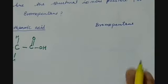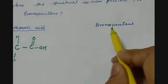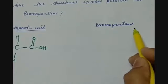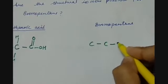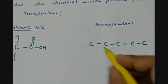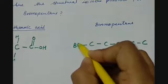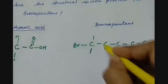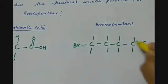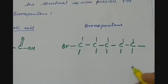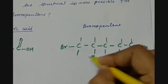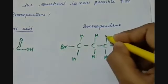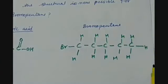For bromopentane, at the first position of the pentane alkane chain we have bromine. We have 5 carbon atoms and at the first carbon we have bromine as a substitutional group, with the rest of the valencies of each carbon fulfilled by hydrogens. This is the structure of bromopentane.